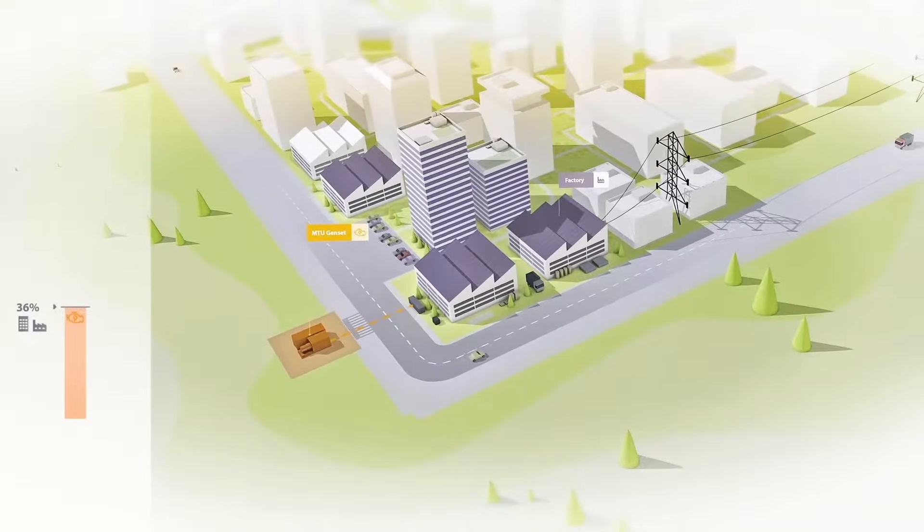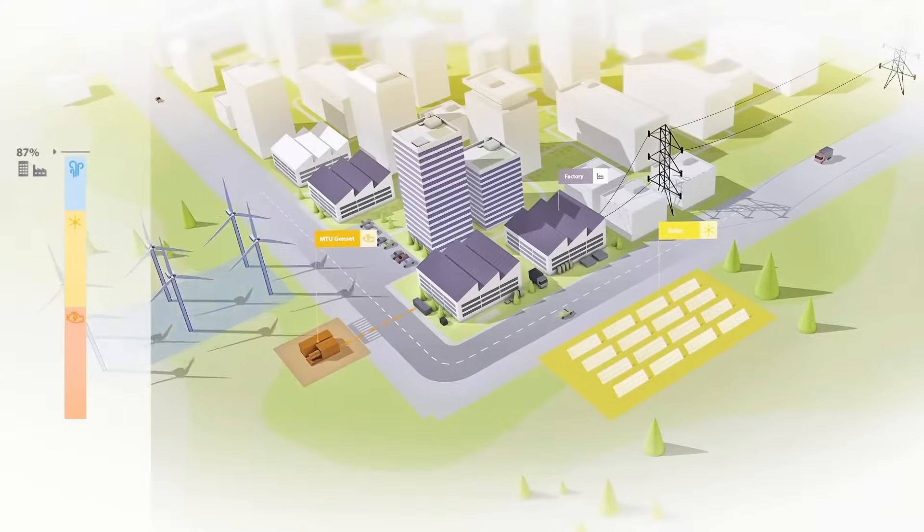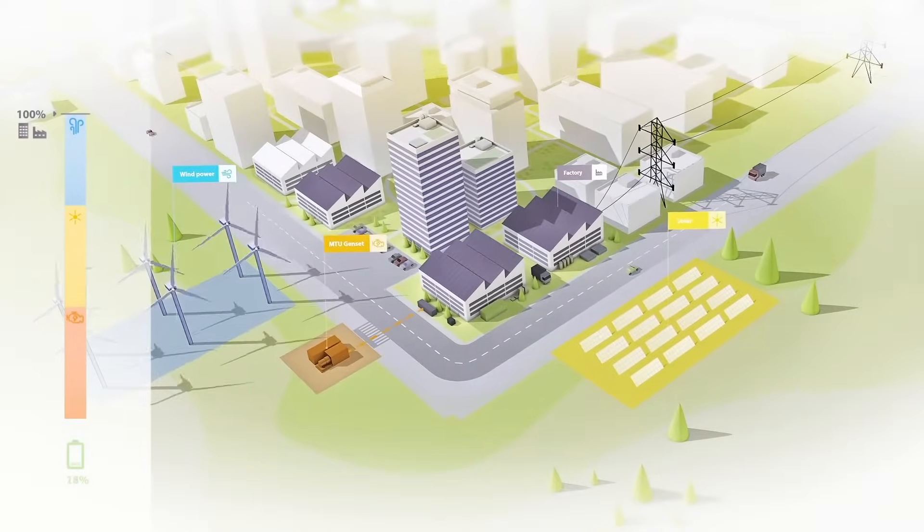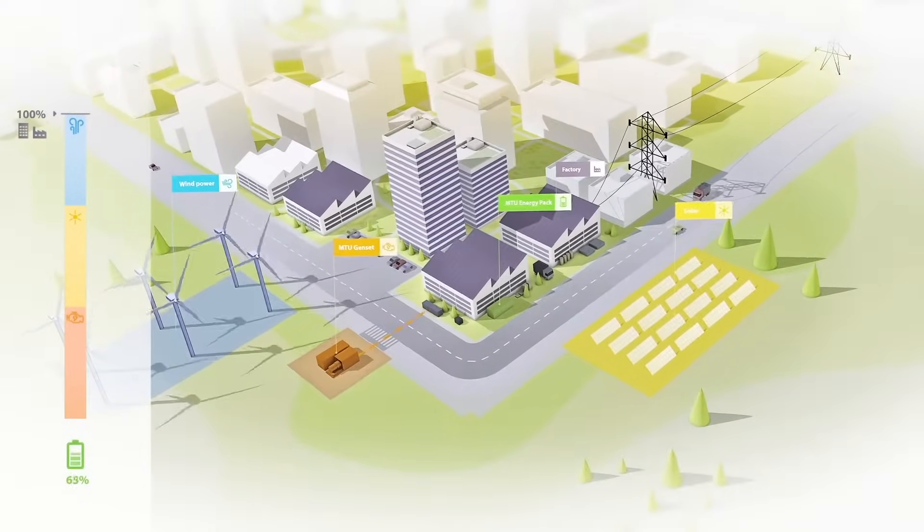For the microgrid, a solar panel array, a wind power unit, and an MTU energy pack for storing excess electricity are installed as well.